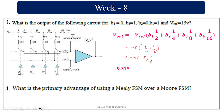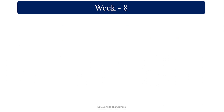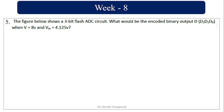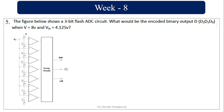What is the primary advantage of using a Mealy FSM over a Moore FSM — faster response to input changes? Next, they have given a 3-bit flash ADC converter.